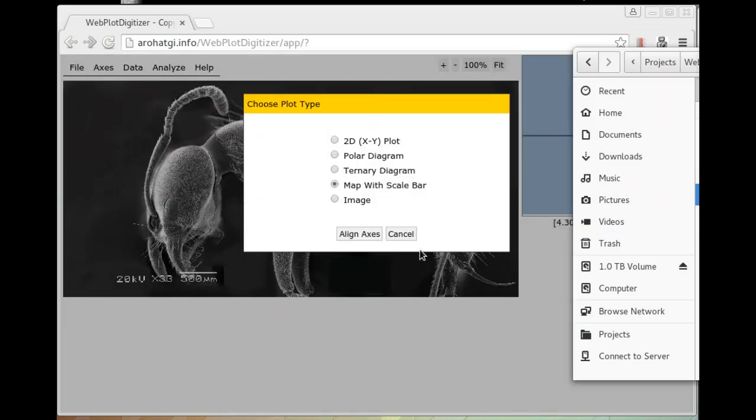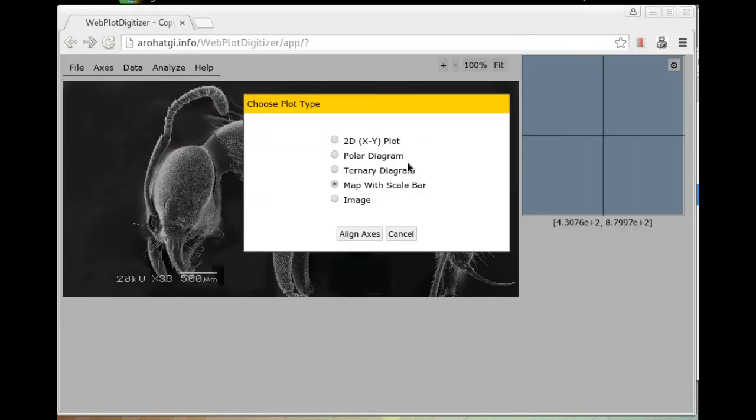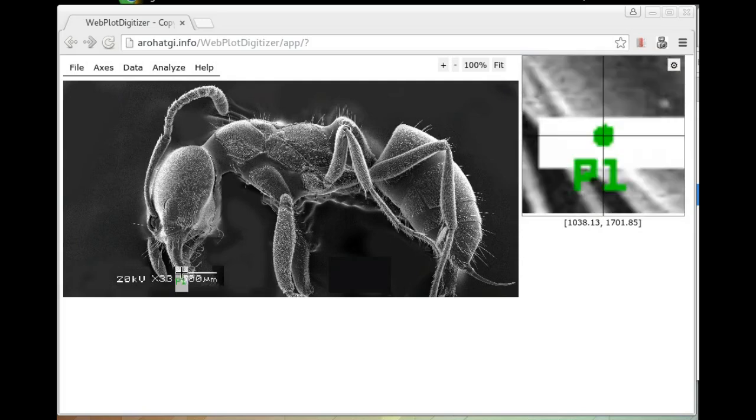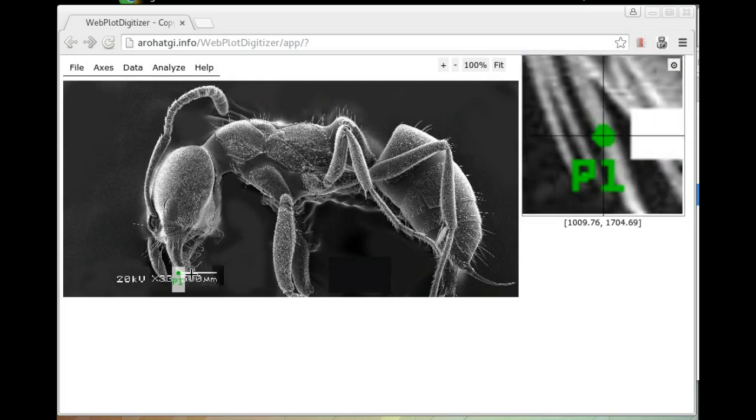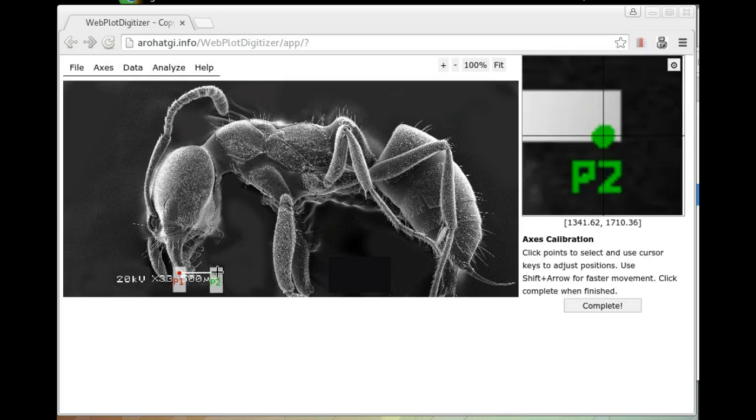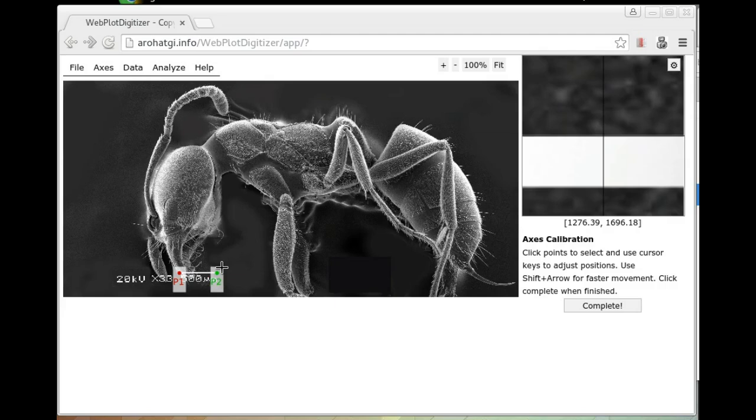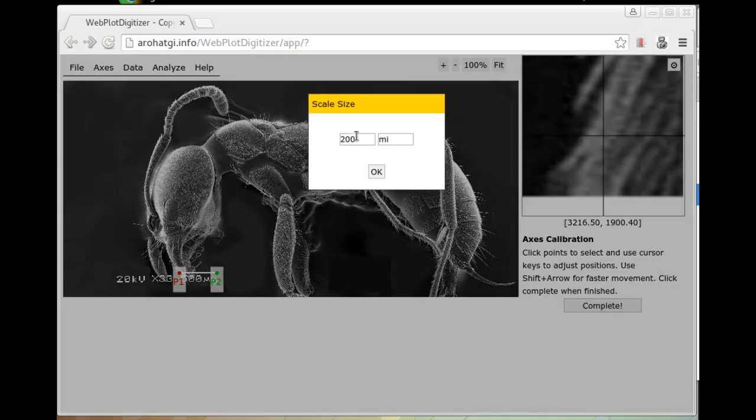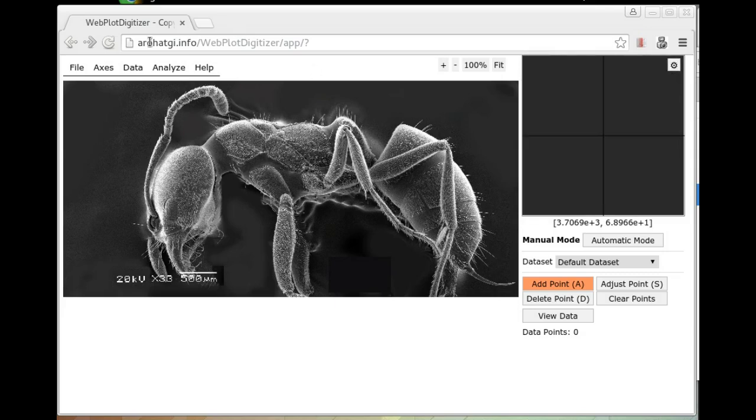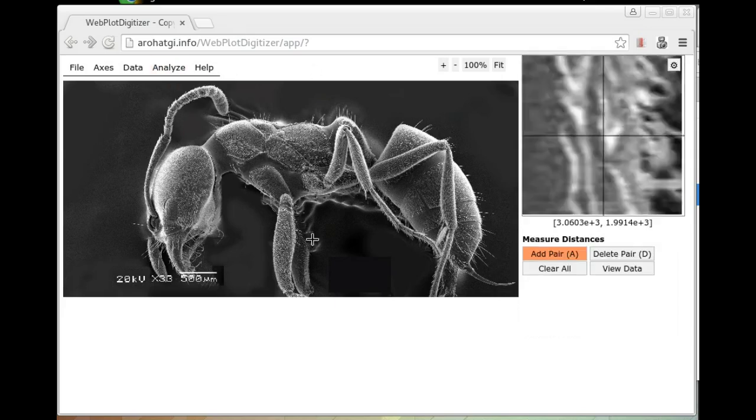You can do a similar thing on a microscope image. Here is a picture of an ant. And again, we will click the map with scale bar, align axis. Here we have the 500 micron scale. So put first point here. Second point, the end of this. Click complete. This is 500 microns.